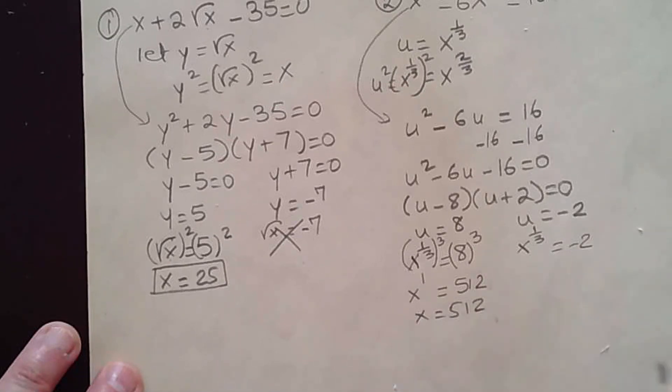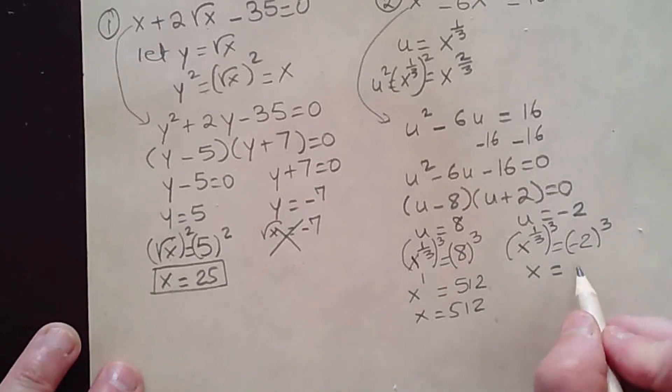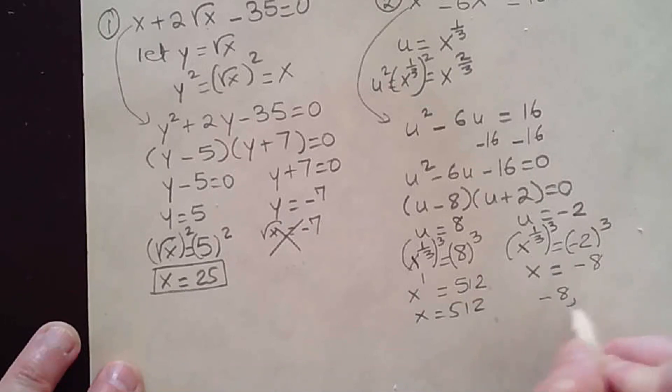And here, you're going to do the same thing. You're going to raise this to the 3rd power, and that gives you x equal negative 2 cubed is negative 8. So your solutions are negative 8 and 512. You're going to enter your solution separated with a comma.